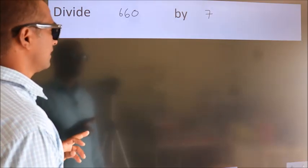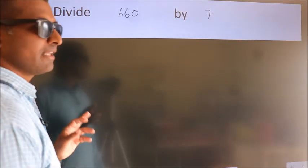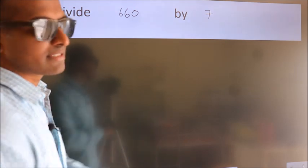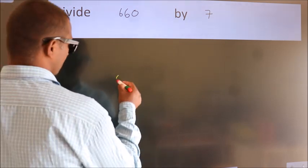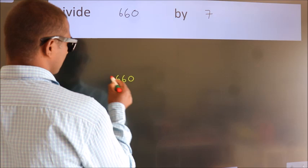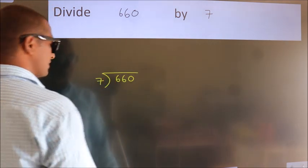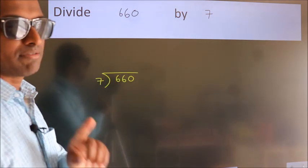Divide 660 by 7. To do this division, we should frame it in this way. 660 here, 7 here. This is your step 1.